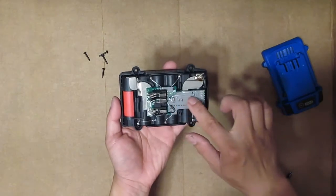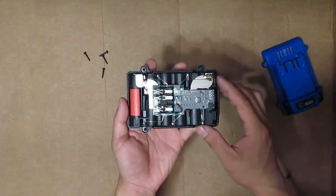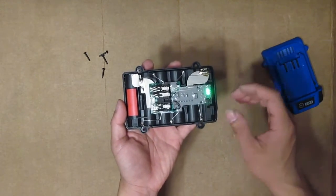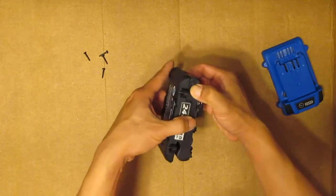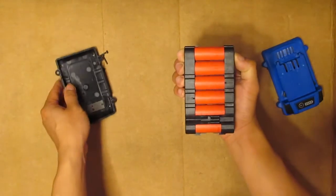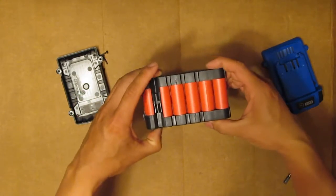This is the circuit board. Test button. Inside 6 18650 cells.